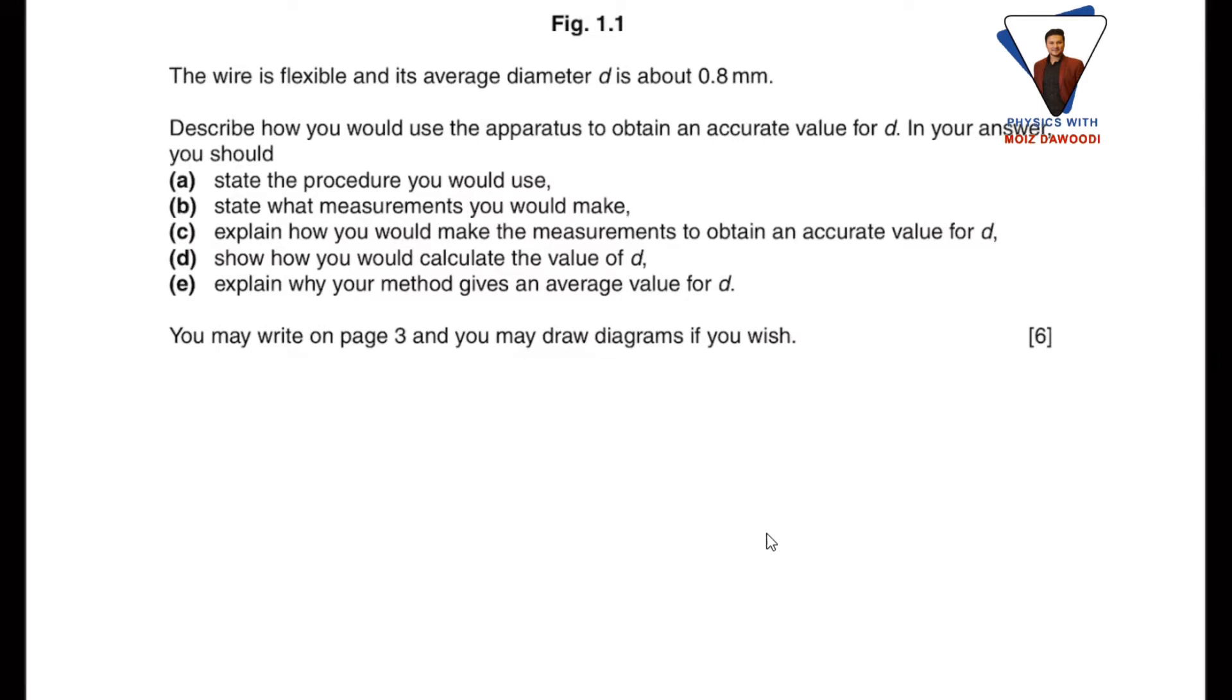So now we have seen the procedure through which we can find out the average diameter of thin wire. Now we can answer the questions step by step. Part a: state the procedure you would use. As we have a set of apparatus, what we can do is wrap the wire on zero centimeter mark of ruler and observe the diameter.